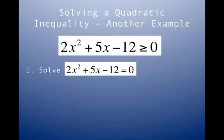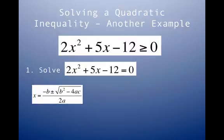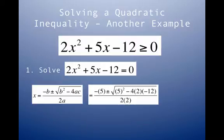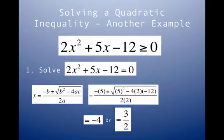Let's do another example, this time with a changed inequality sign: 2x² + 5x - 12 ≥ 0. We want to find where this parabola is above the x-axis. Step one, solve the quadratic equation using the quadratic formula with a=2, b=5, and c=-12. After working through the formula, I get x = -4 and x = 3/2 as my x-intercepts.